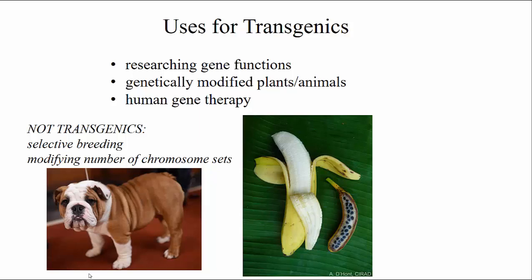Also, we've talked about changing the number of chromosome sets. For example, the historic version of a banana has seeds and would be a diploid banana. Bananas used for food are actually intentionally made to be triploid, so they do not make seeds, and they are much better for eating.